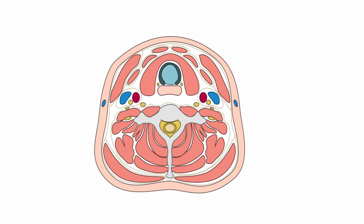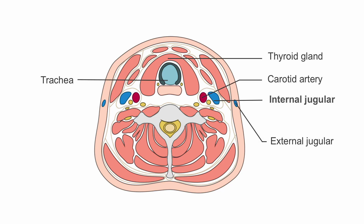This is a cross-sectional image of the mid-anterior neck. Here you can see the relationship of the internal jugular vein to the carotid artery and the other structures of the neck. This will be very important to orient yourself to the cross-sectional images you'll see on ultrasound.